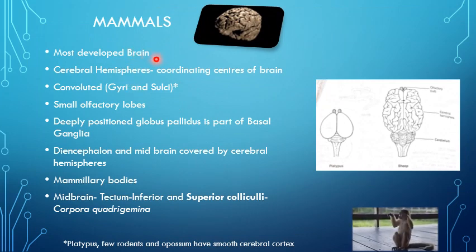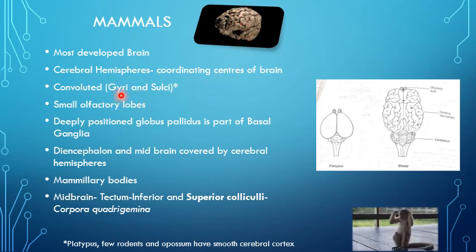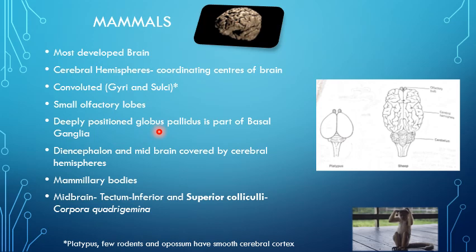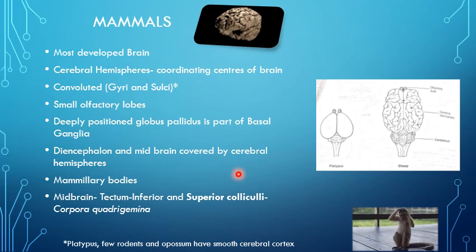Mammals have the most advanced brains, where the cerebral hemispheres act as the coordinating center. The brain shows convolutions or folds in the form of gyri, with grooves known as sulci. The mammalian brain has very small olfactory lobes and a deeply positioned globus pallidus, which is part of the basal ganglia. The diencephalon and midbrain are completely covered by the cerebral hemispheres. There is also a presence of mammillary bodies, which are rounded paired structures that are part of the diencephalon and the limbic system.